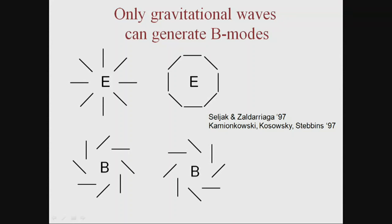Instead of trying to directly measure the spacetime metric, we search for a pattern in CMB polarization. It was proposed to look for a curl component in the linear polarization of the microwave background. A radial or circular pattern is called the E-mode or gradient mode, while a curly pattern is known as the curl mode or B-mode — analogous to electromagnetism.